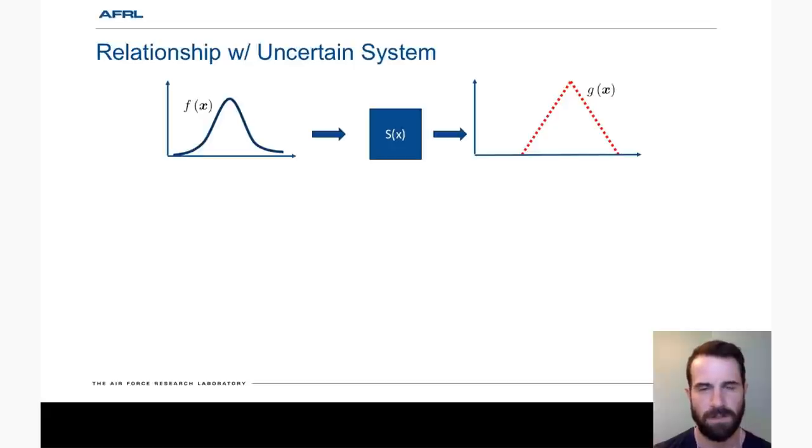Now how is this related to uncertain systems? Let's consider our system s that has some initial joint density function f and some observable that exists on some future time horizon. We wish to compute the expectation of that observable. One way to do that is to push the density function through the system, arriving at this push-forward density, and then we can compute the expectation as the inner product of these two functions.